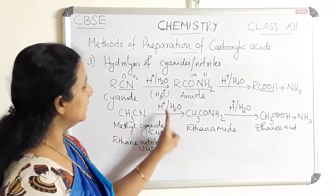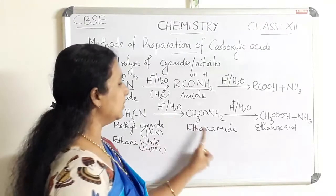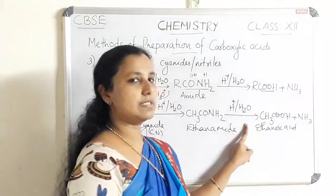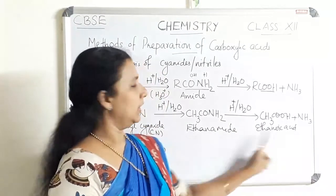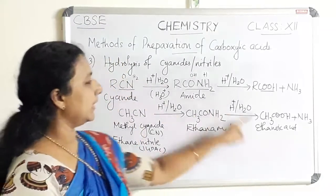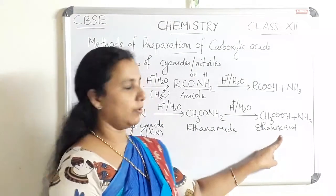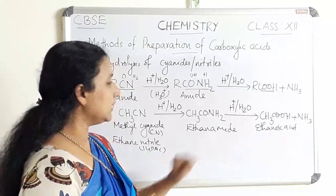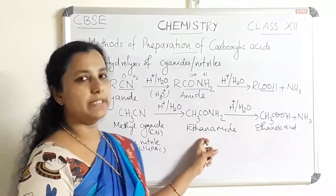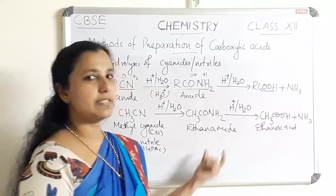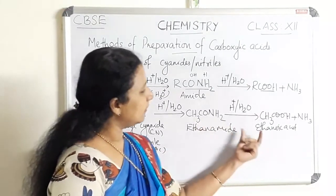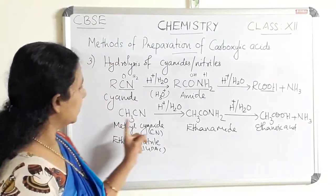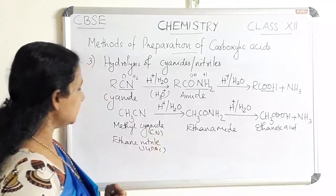To summarize: methyl cyanide on acid hydrolysis forms ethanamide — that means the corresponding amide is formed. Further hydrolysis gives the corresponding acid. If the reaction condition is strong, ethanoic acid is the end product. If the reaction condition is weak, amide is the product and the reaction stops there. This is an example of getting carboxylic acid from cyanides.